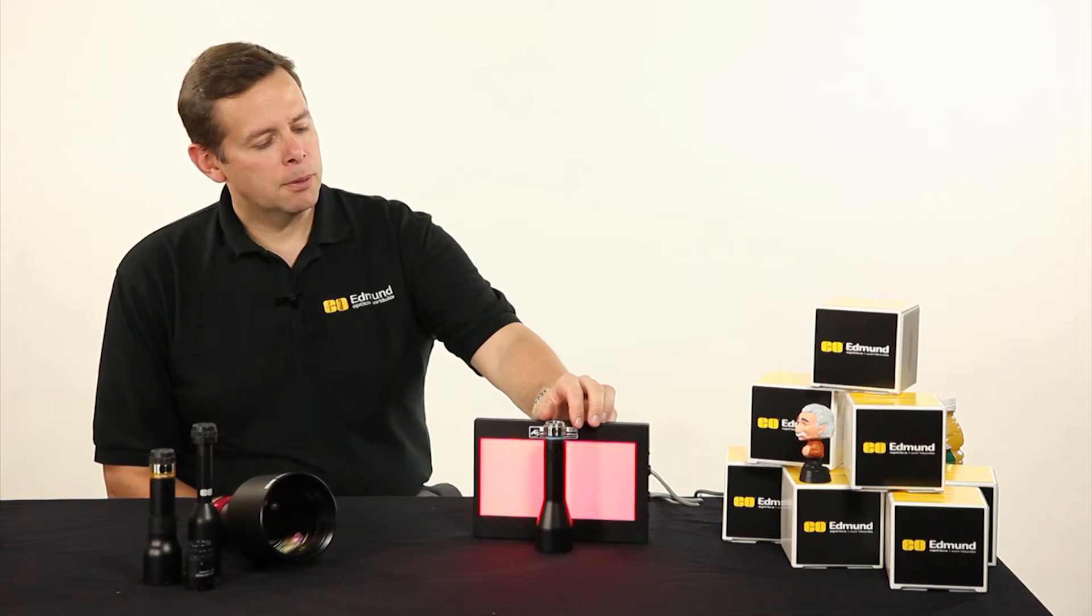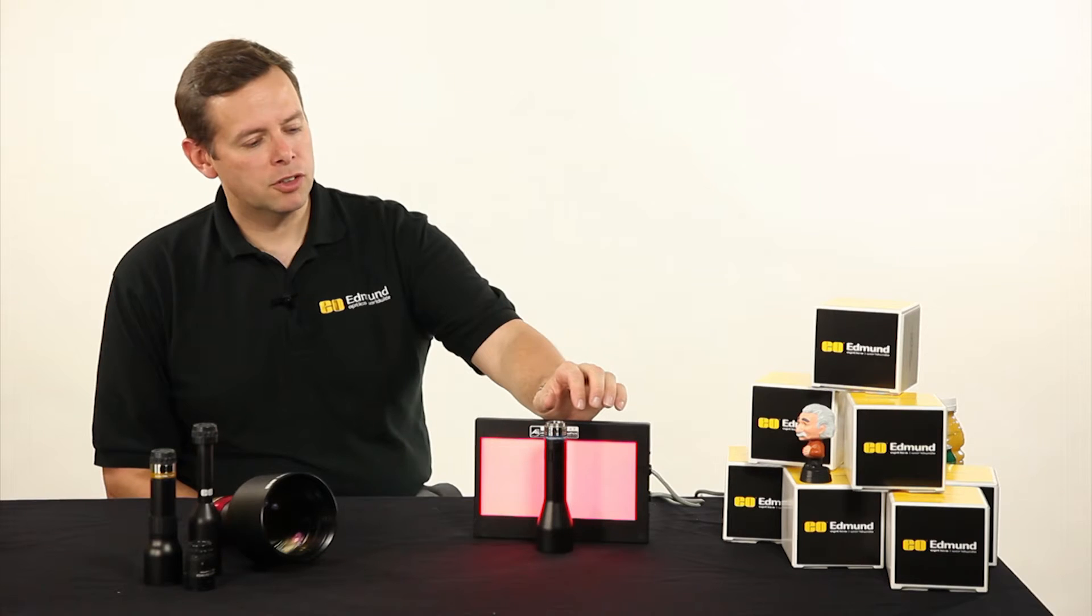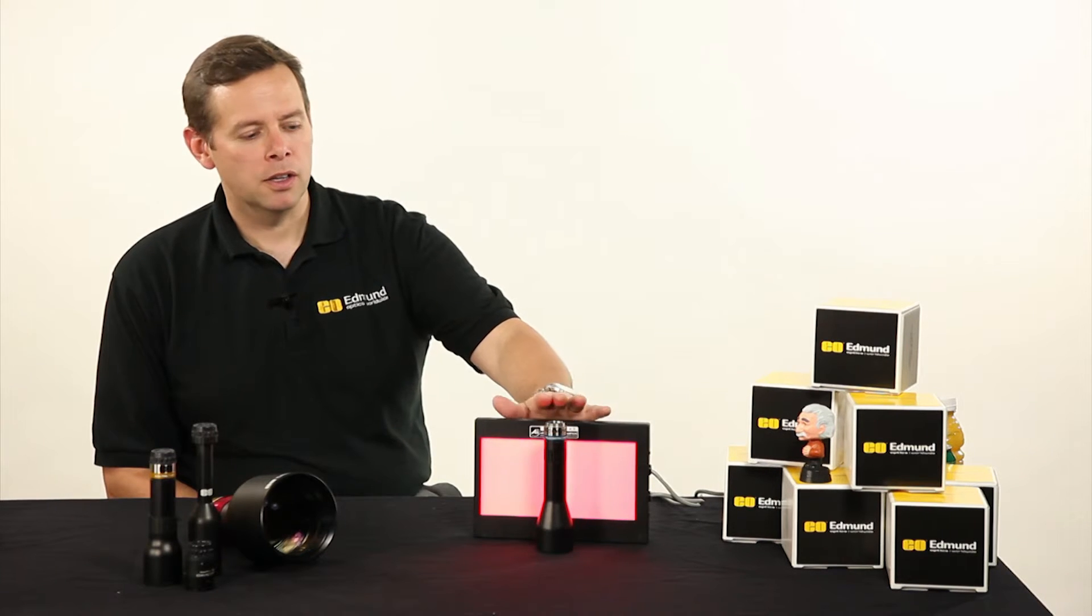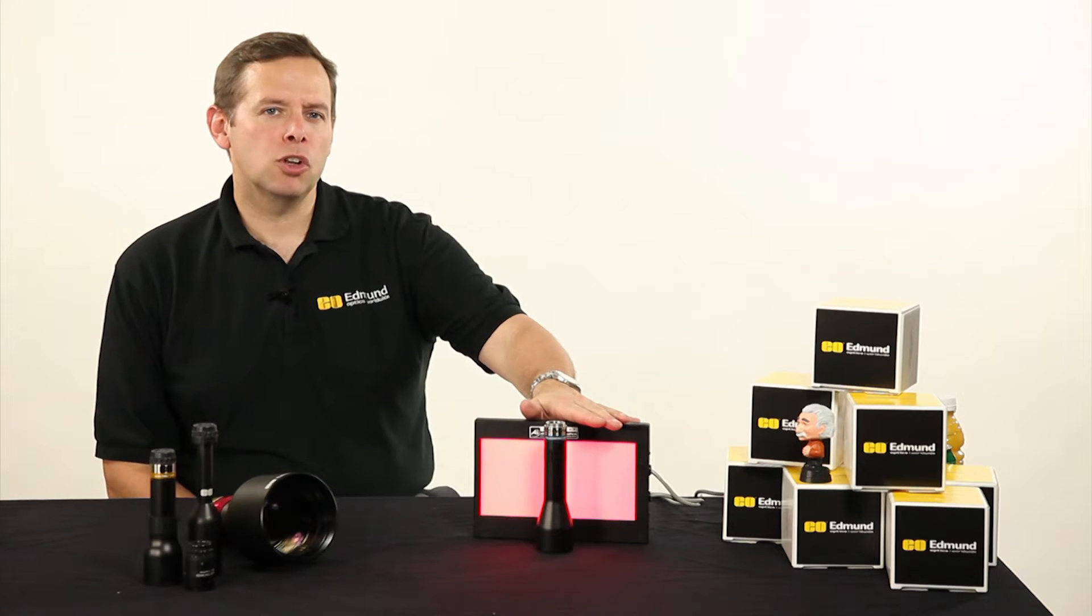And what an area backlight does is allows us to get a silhouetted image. So it's a little tough to see here because we have some front illumination on the lens that we have in front of the light. But what it does is it allows us to create a silhouetted image to look at an object,